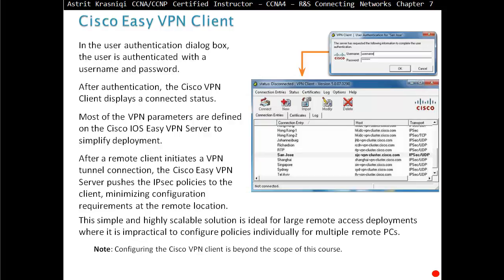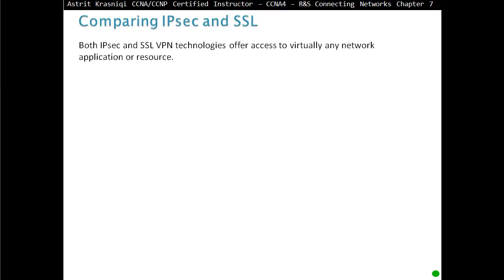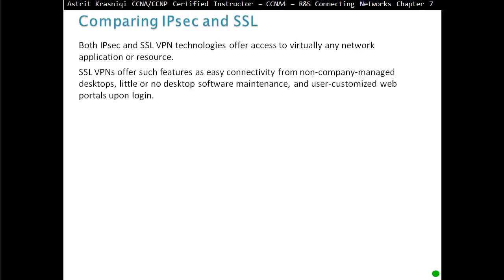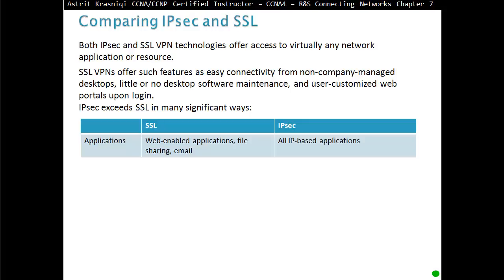Comparing IPSec and SSL: both technologies offer access to virtually any network application or resources. SSL VPN offers easy connectivity from non-company managed desktops, little or no desktop software maintenance, and user customized web portals upon login. SSL supports web-enabled applications such as file sharing and email, while IPSec supports all IP-based applications. With SSL you're accessing the headend via a web browser, while with IPSec you are virtually entering the local area network.